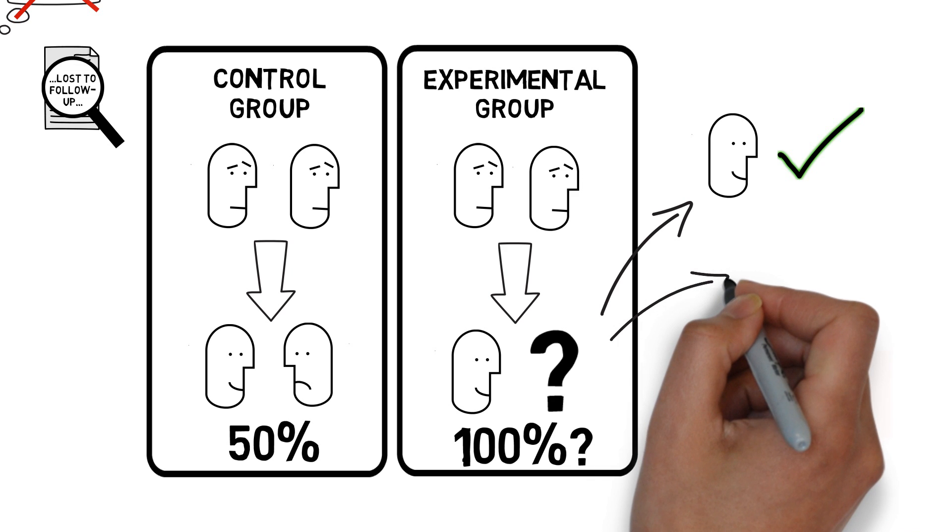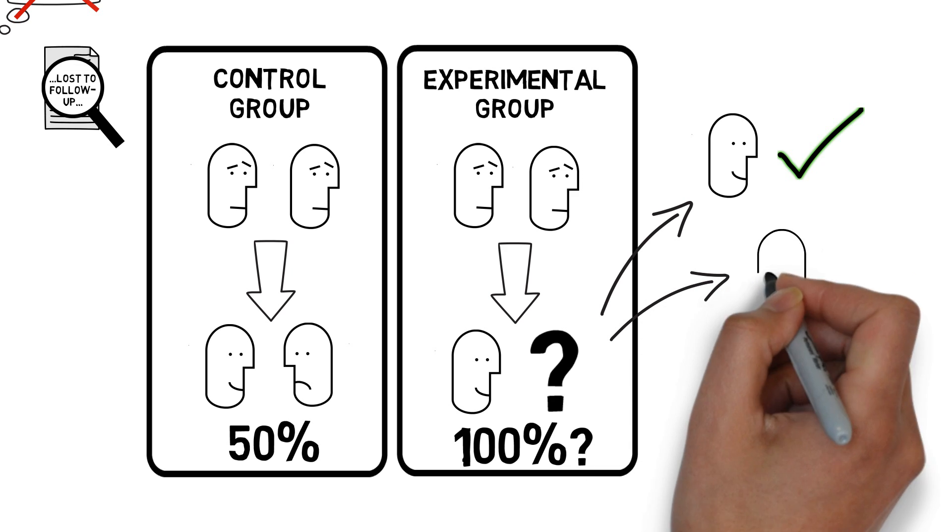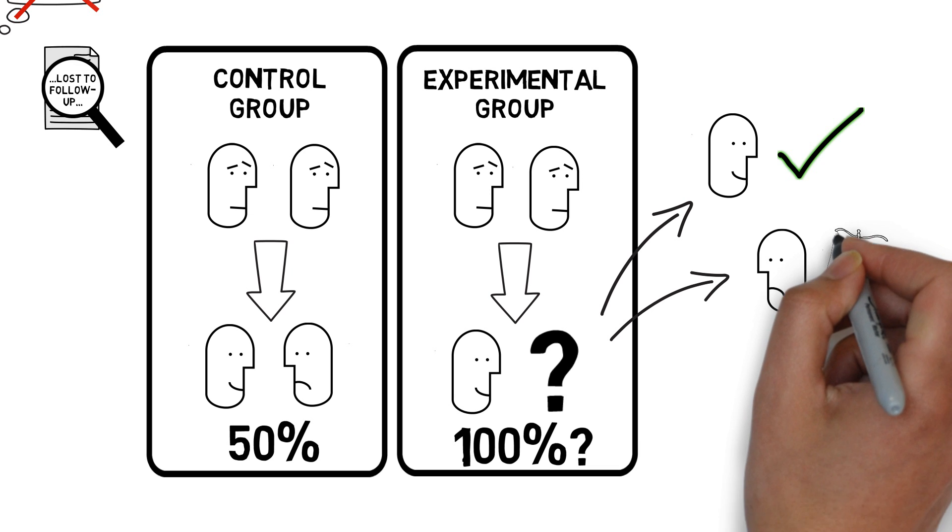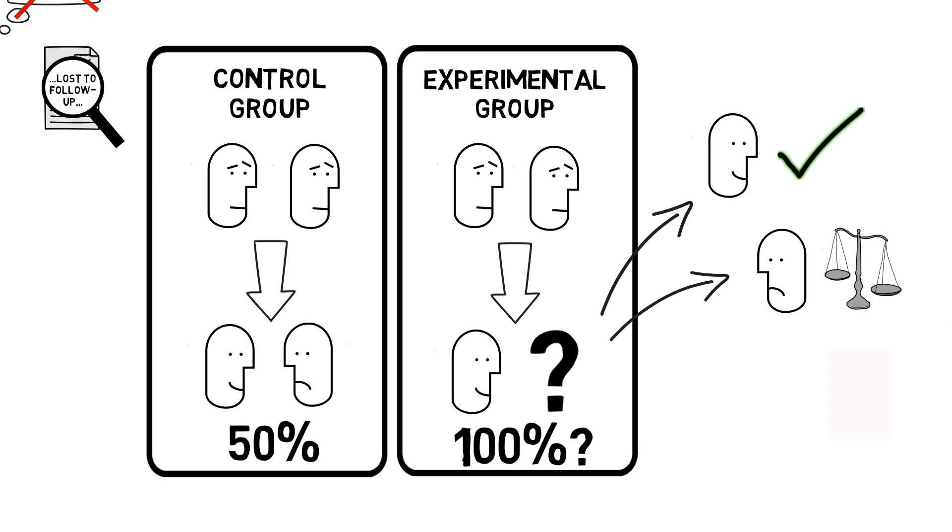Secondly, the participant may not have had the good outcome, and this would have left the experimental group with a 50% probability of good outcome, in which case it's no better than the control group, and we'd have to weigh the other things involved with making a decision, such as cost, compliance, and adverse effects.